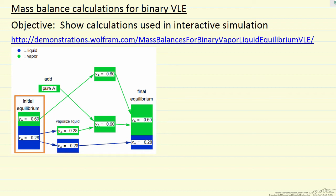On the left here, we add just one component, in this case A, and we add an amount such that we're still in vapor-liquid equilibrium.